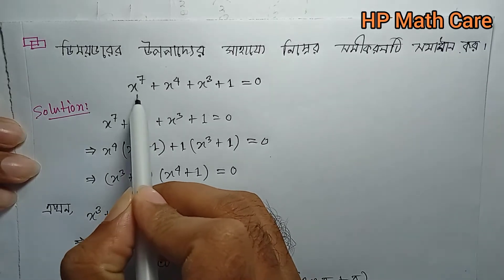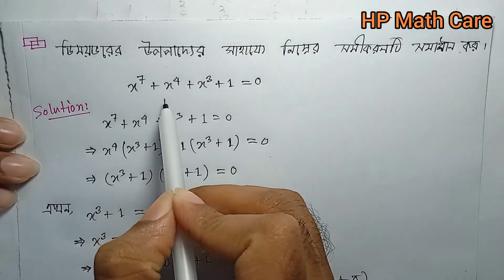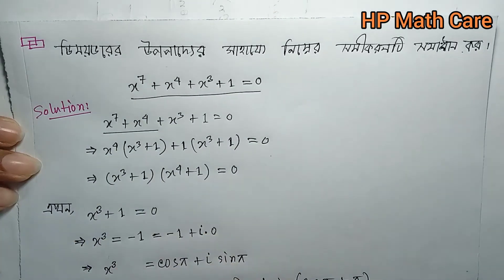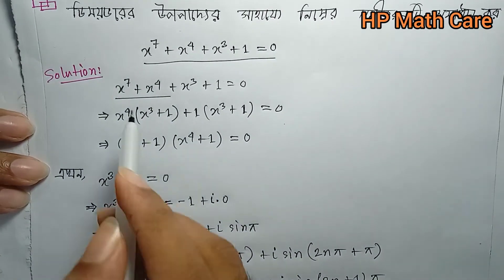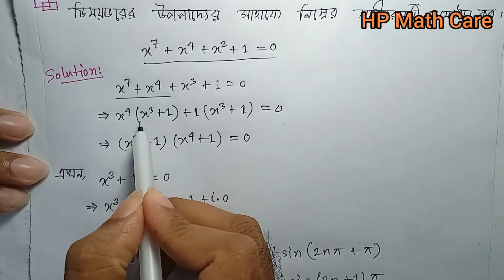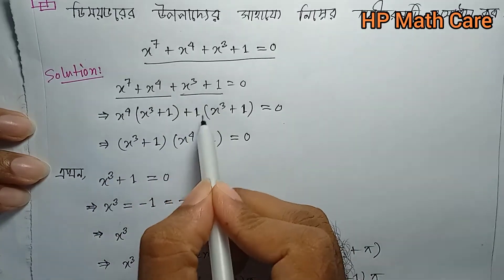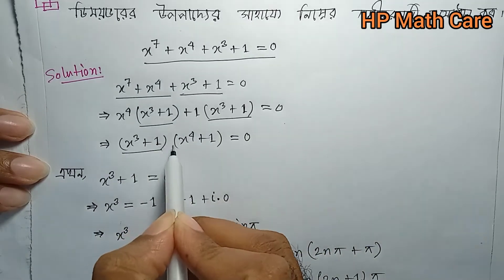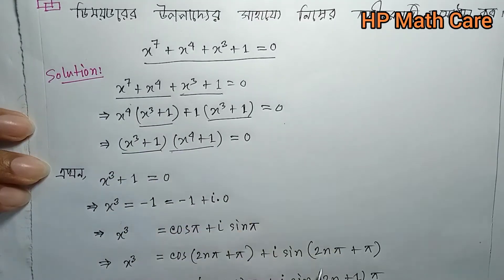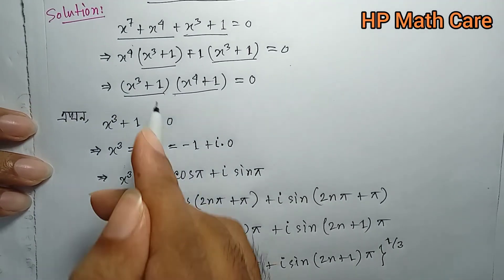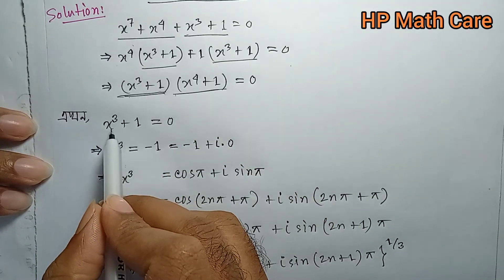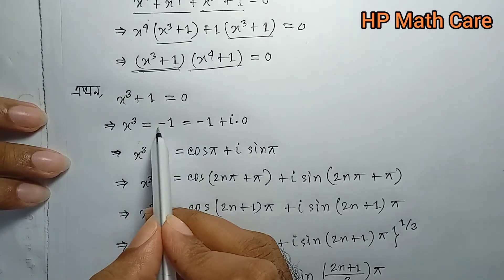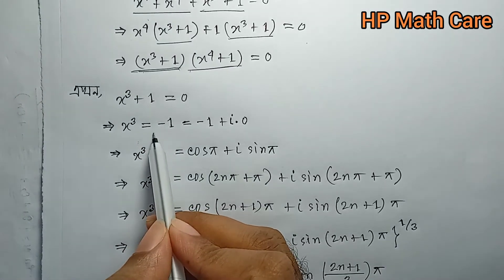You see what is the same type: x power 7 plus x power 4 plus x cube plus 1 equals 0. What is the common number? x power 4 is common here, so x cube plus x cube plus 1. Where is x cube plus 1 and x power 4 plus 1 equals 0? Now we will use x cube plus 1 equals 0. So what do we write? x cube equals minus 1.